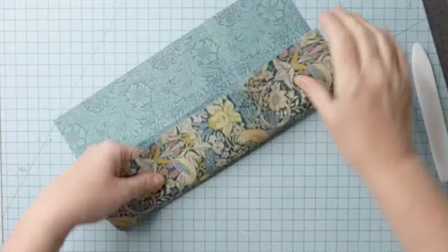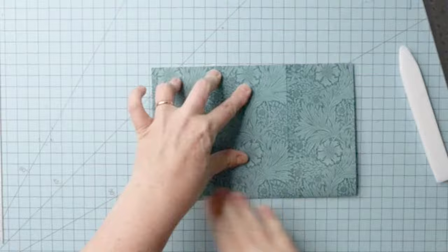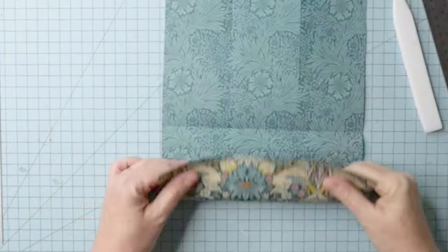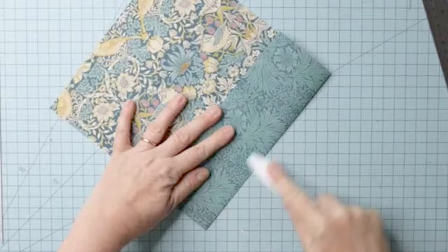You don't have to have double sided paper for this project. Folding it in half, short edge to short edge and then into quarters on that short edge. Your bone fold is your friend in this project.